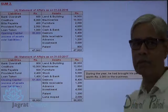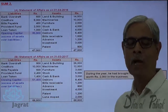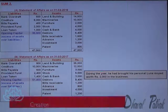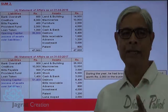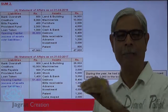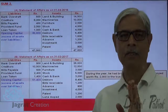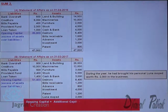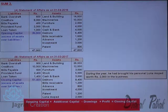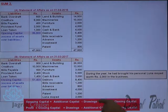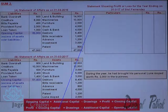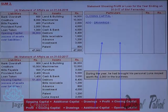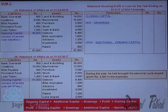Now I will prepare the capital comparison statement, taking into consideration the closing capital, opening capital, and details of drawings and additional capital. The formula is: opening capital plus additional capital minus drawings plus profit equals closing capital. To make profit the subject of the equation: profit equals closing capital plus drawings minus additional capital minus opening capital. So in this statement, I write closing capital first, then add drawings, and deduct additional and opening capital.